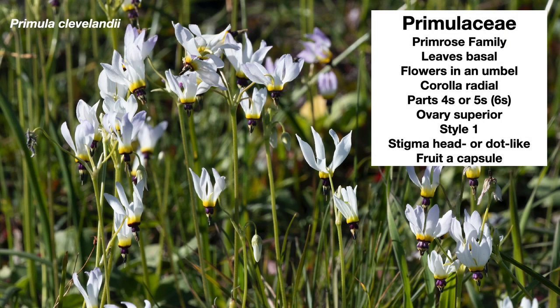Shooting stars are in the family Primulaceae and they all have a similar life cycle. Lowland species begin to grow in winter, while high elevation species have to contend with low temperatures and snow, so they begin to grow in late spring and summer. To show each developmental stage in the life of shooting stars, we'll use Primula clevelandii, Cleveland's shooting star.